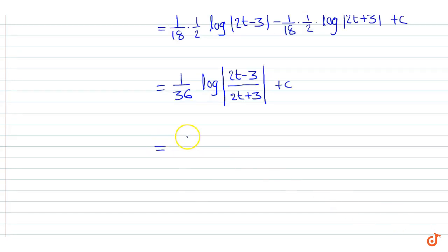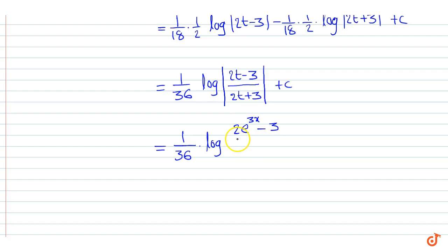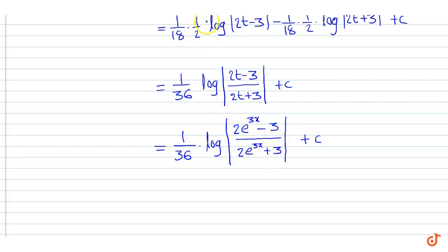This is equal to 1 by 36 into log, where t is equal to e to the power 3x. So we write 2 e to the power 3x minus 3 divided by 2 e to the power 3x plus 3, mod plus c. Where c is the constant of integration, and that is our final expression for the integral.